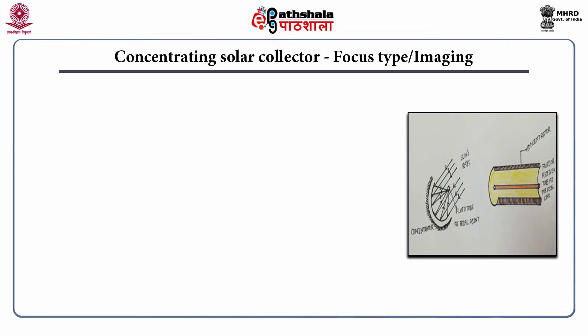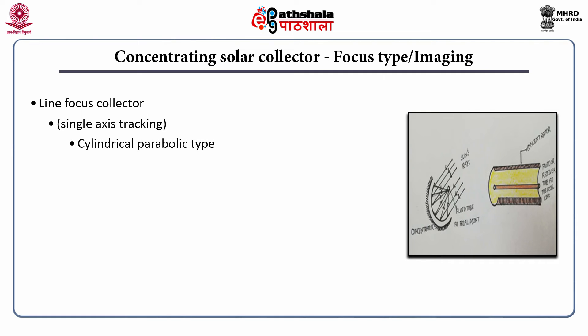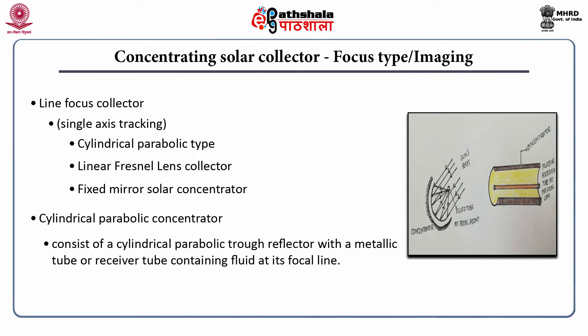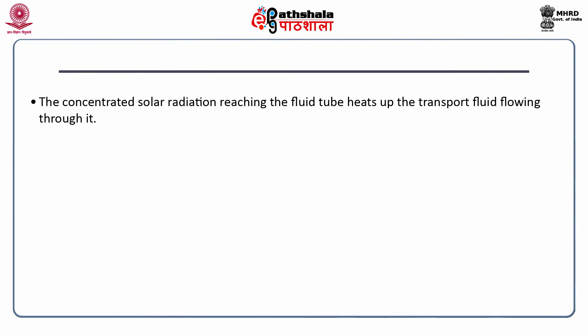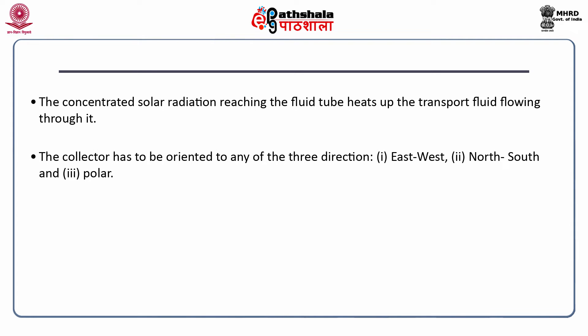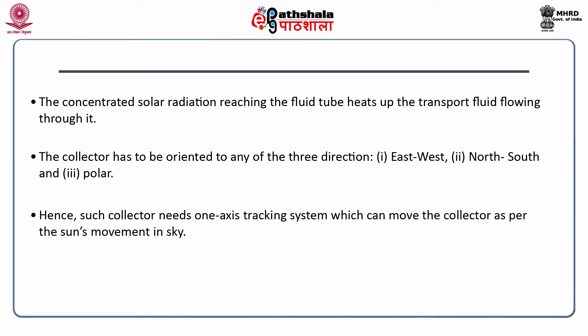For the focus-type (imaging) line focus collectors with single-axis tracking, the types include cylindrical parabolic, linear Fresnel lens, and fixed mirror solar collectors. The cylindrical parabolic concentrator consists of a cylindrical parabolic trough reflector with a metallic receiver tube at its focal line. The fluid tube is blackened for better solar absorption, and concentrated radiation heats the transport fluid. This collector is oriented east-west, north-south, or polar, requiring a one-axis tracking system, with concentration ratios in the range of 5 to 30.